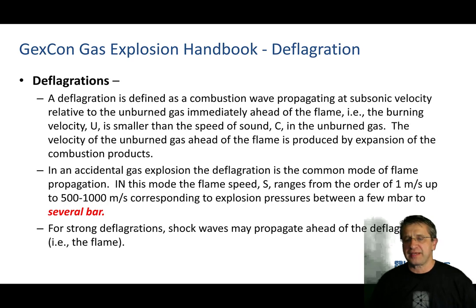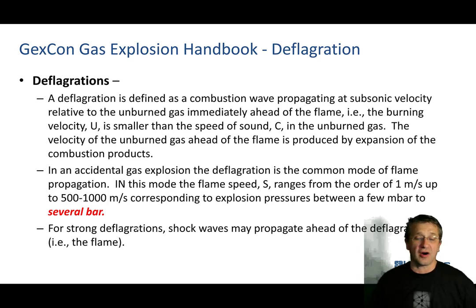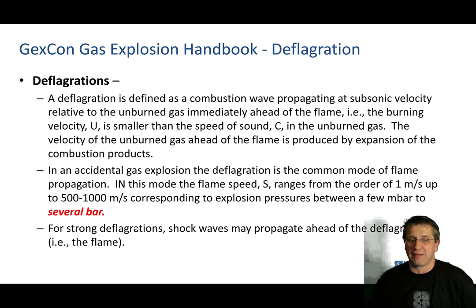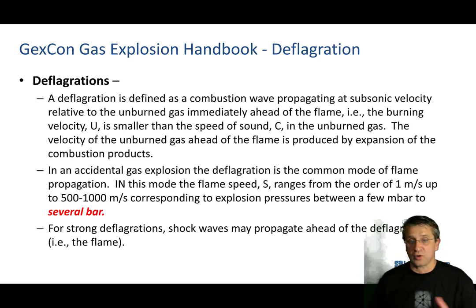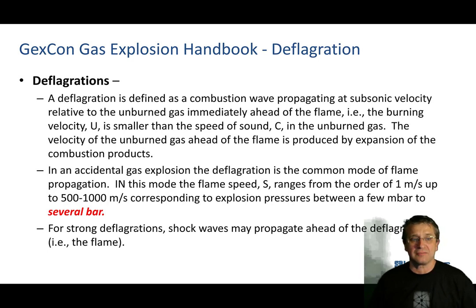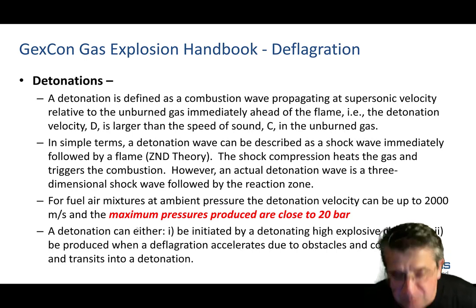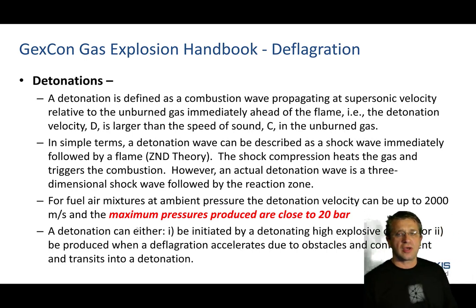In the deflagration mode, flame speed varies from about one meter per second up to about 500 to 1,000 meters per second, giving overpressures from a few millibar all the way up to several bar. A bar is about an atmosphere, just short of 15 psi, so several bar could mean 30 to 45 psi of overpressure — which is very dramatic. Don't be fooled into thinking a deflagration cannot cause massive amounts of damage, because it can. With strong deflagrations your shockwave might be significant enough to propagate ahead of the flame.